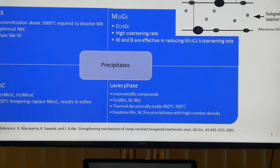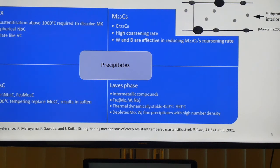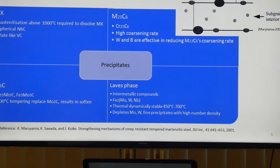Vanadium can be added to stabilize the molybdenum carbide. The last precipitate is Laves phase, which is an intermetallic compound with an A2B formula — A being iron and B being molybdenum, tungsten and niobium. Laves phase is thermodynamically stable at temperatures from 450°C to 700°C, which is above the service temperature — exactly what we want. However, Laves phase is highly enriched with molybdenum, tungsten and niobium, depleting these solid solution elements from the matrix. Fine Laves phase precipitates with a high number density contribute significantly to creep strength.